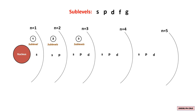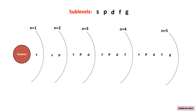In the fourth energy level, there are four sublevels: S, P, D, and F. The F sublevel is also spotted in the fifth energy level. In the fifth energy level, there are five sublevels: S, P, D, F, and G. Since this sublevel is in the first energy level, we write one before the sublevel — in this case, 1s. The same applies to sublevels in higher energy levels. This number represents the energy level and the letter represents the sublevel.